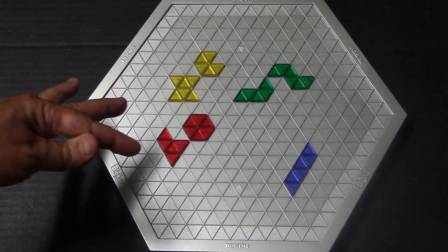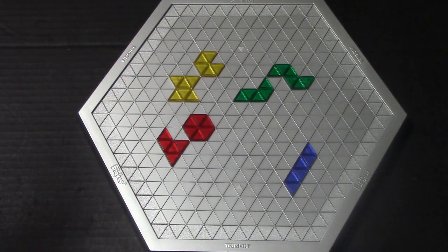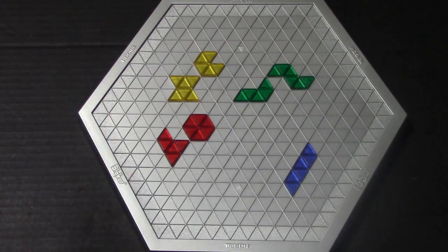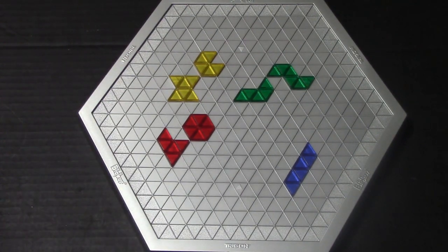Once a player is unable to place any pieces on the board, their part of the game ends. The game ends when all players are blocked from laying down any more of their pieces.